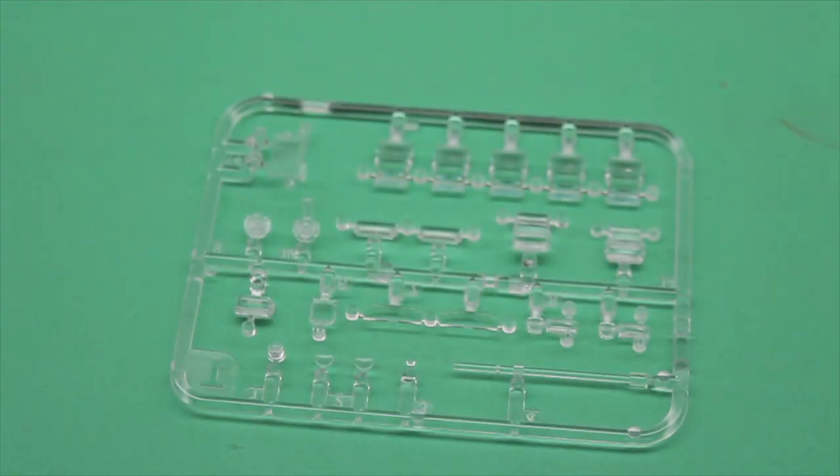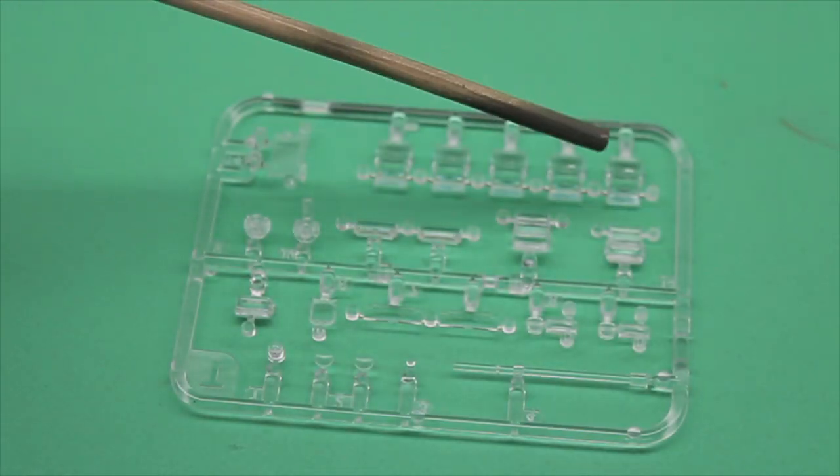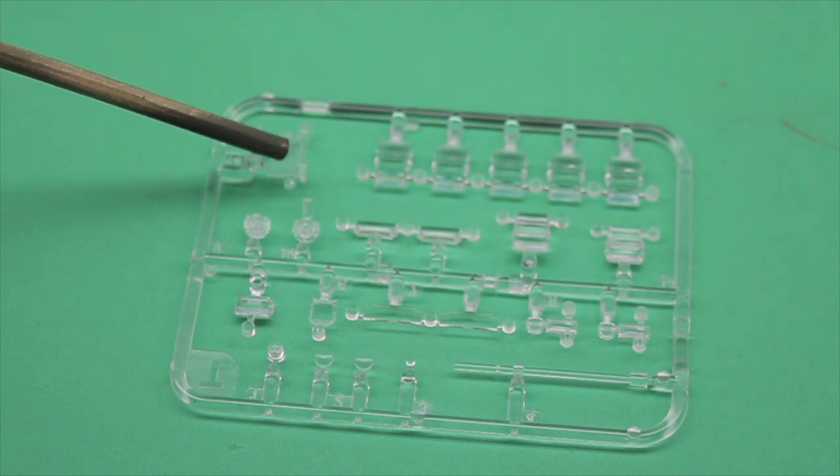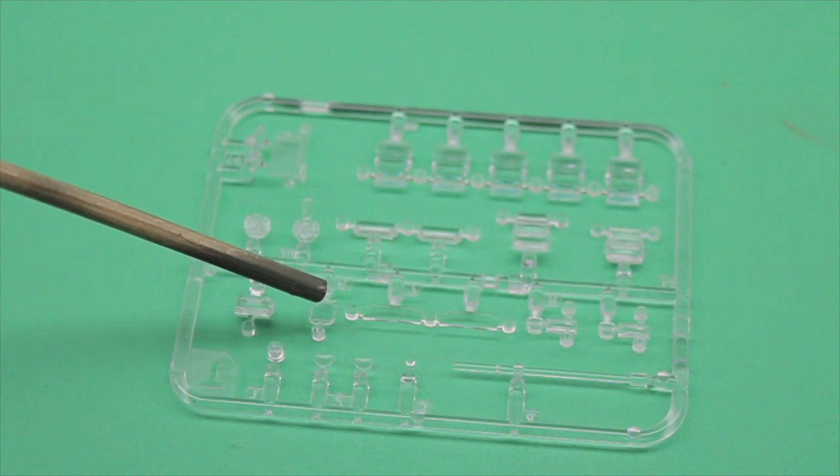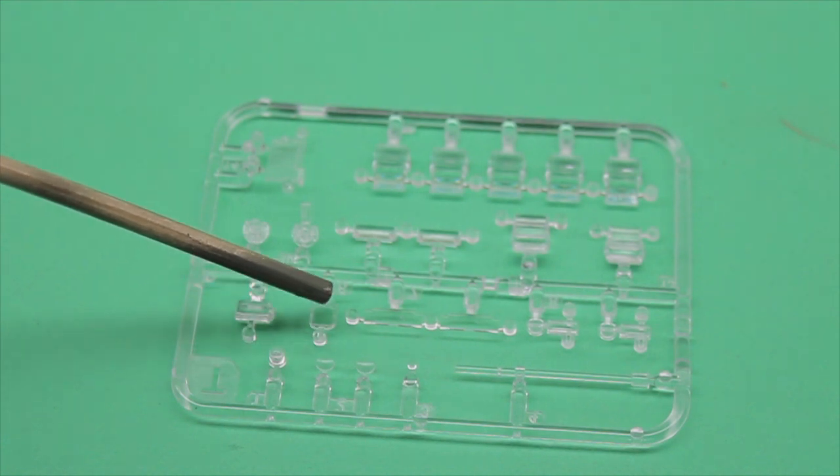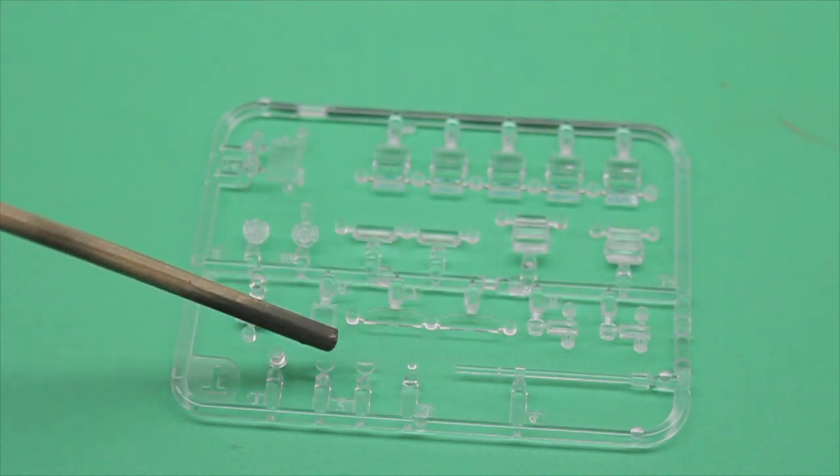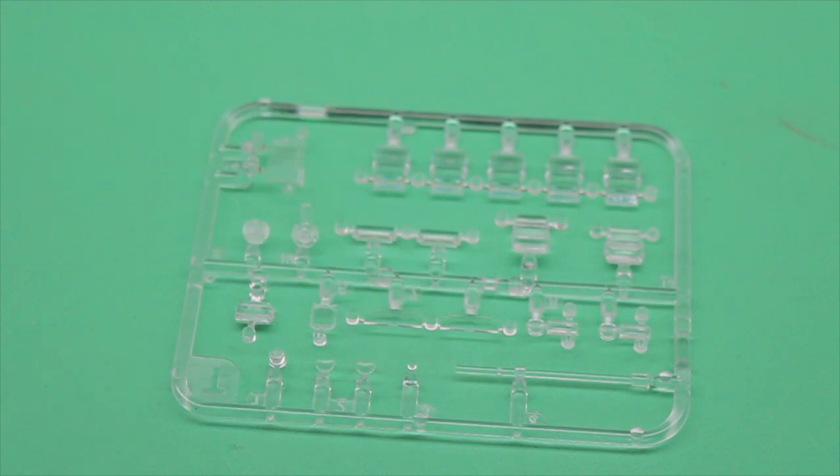This is going to be your clear sheet, which is going to have your periscopes, your sighting system, and then your warning beacon, your commander sight, your taillights and headlights, all in clear plastic. So you can paint them accordingly, however you want to do those. Really nice, good quality parts.